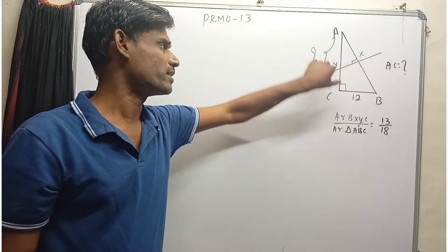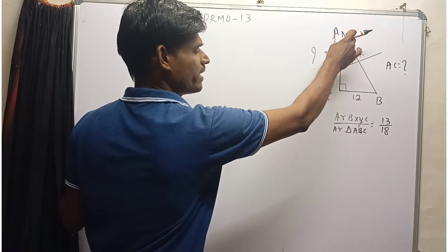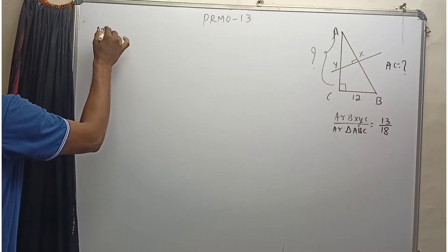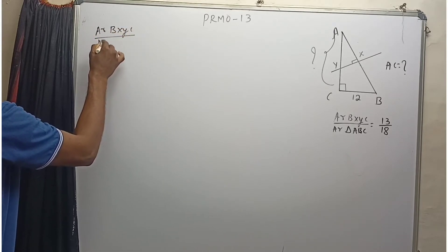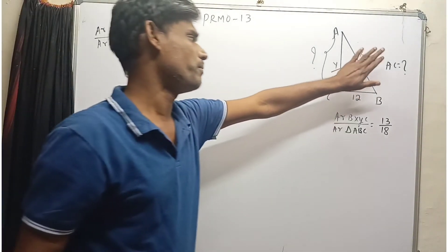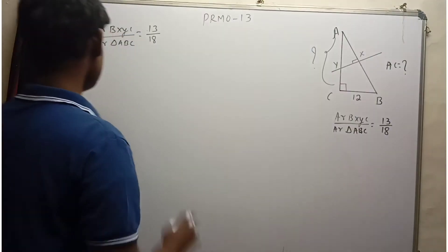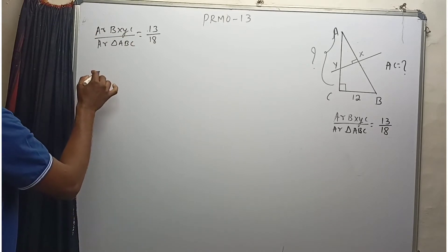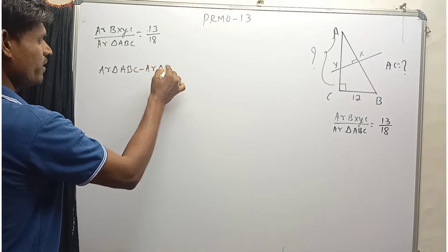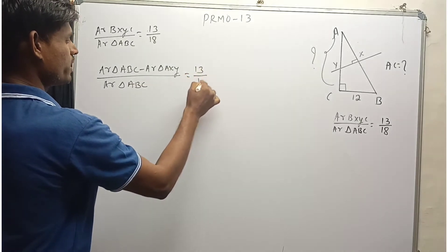We need to calculate the length of AC. To do that, let's first find the ratio of the areas of triangle AXY and triangle ABC. We write: area of BXYC divided by area of triangle ABC equals 13 by 18. We can get the area of BXYC by subtracting the area of triangle AXY from the area of triangle ABC. So, area of BXYC equals area of triangle ABC minus area of triangle AXY, divided by area of triangle ABC, equals 13 by 18.